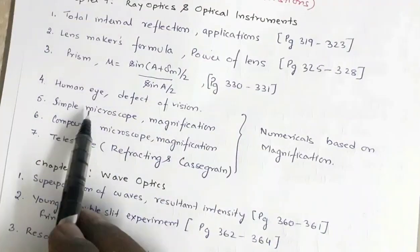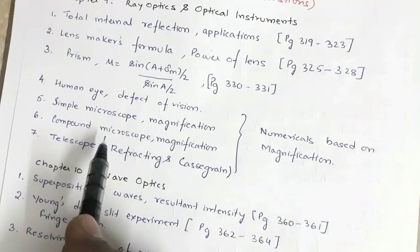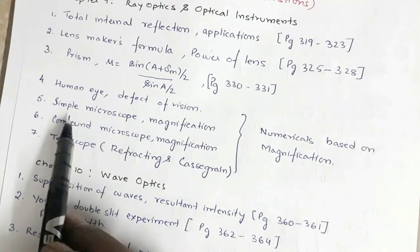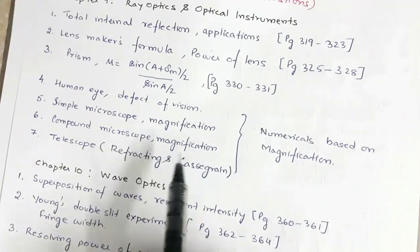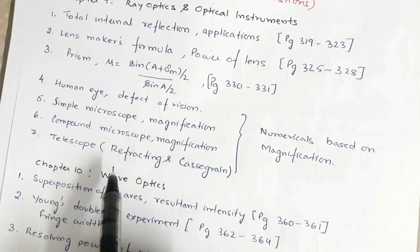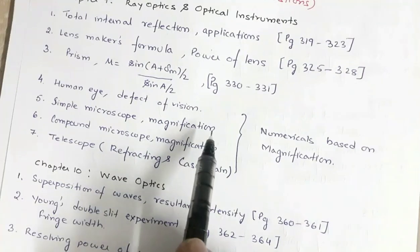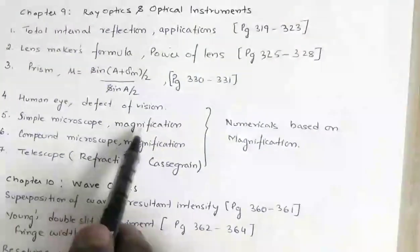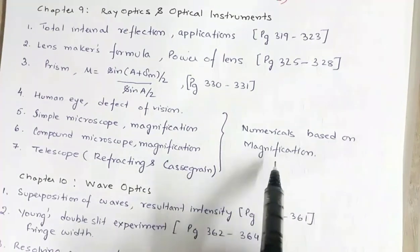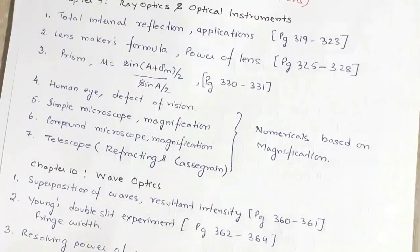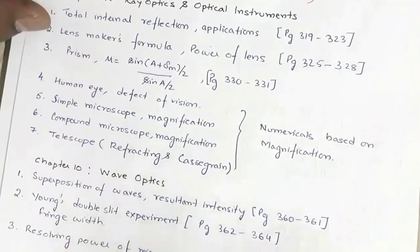All the optical instruments are very important. There is a definite chance that one instrument may come in your examination — either the simple microscope with its magnification, compound microscope with its magnification, or the telescope, both refracting type and Cassegrain type. There may be one part theory question based on any one optical instrument and one part numerical based on calculation of magnification.